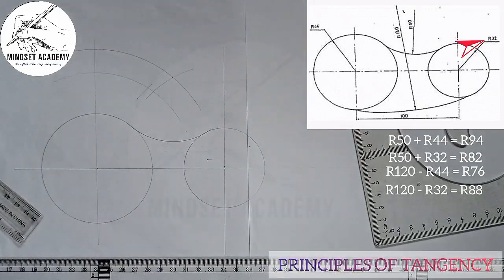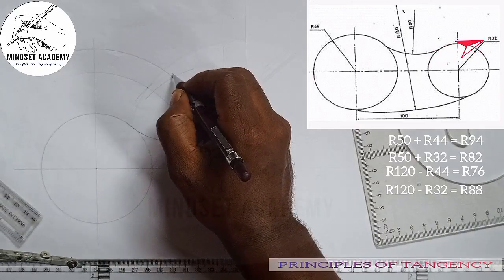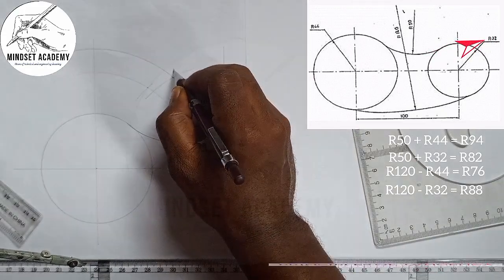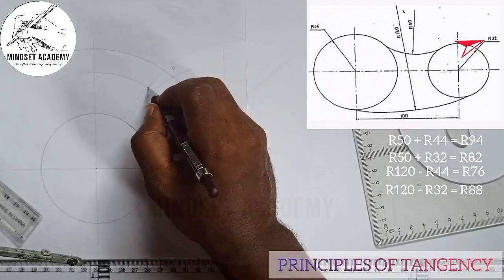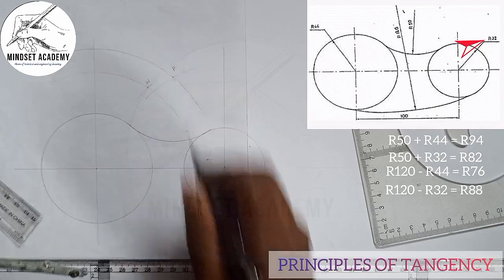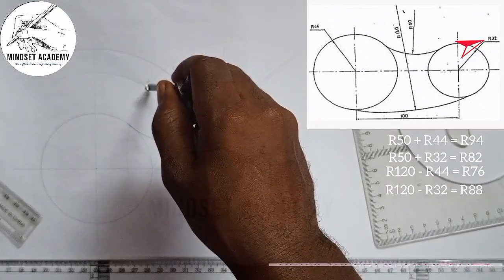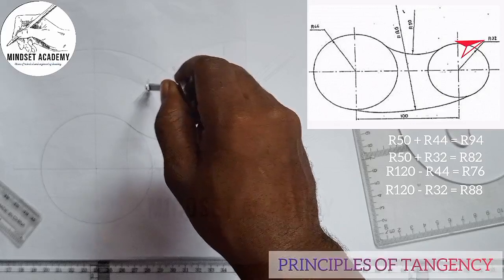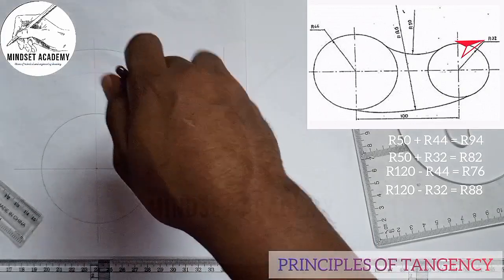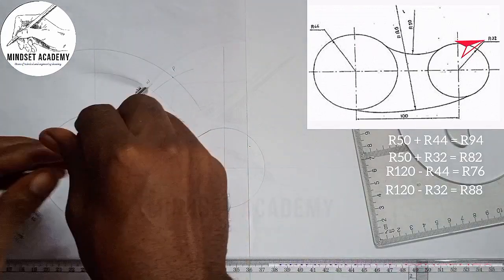I'll place it at this center point. If you look at it, they are meeting at this point — let me call it P. And the second one, let me call it W. So I'll place my compass where they are meeting and take it to this point, ensuring that it is tangential.